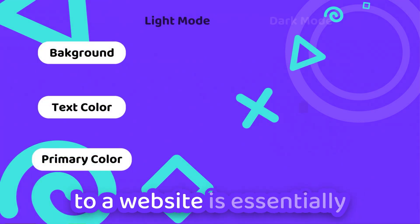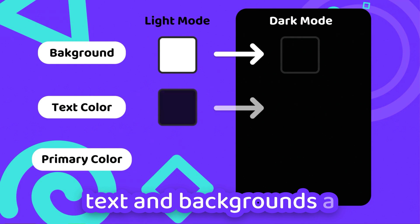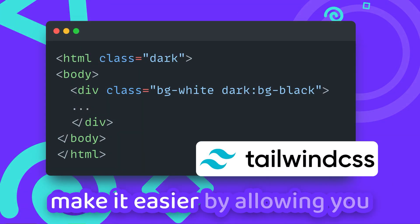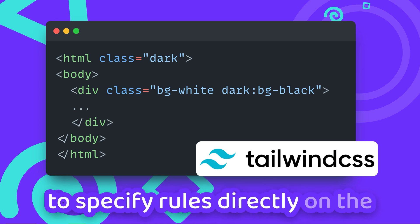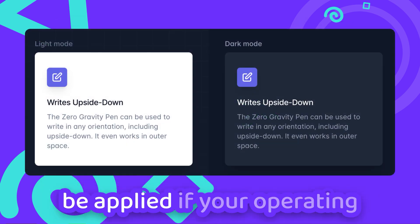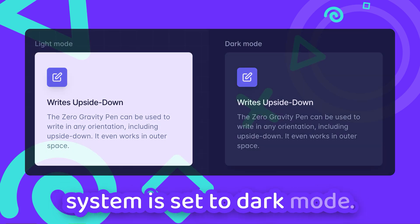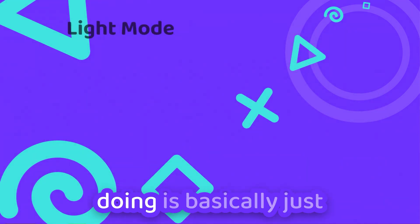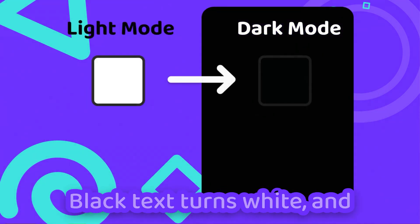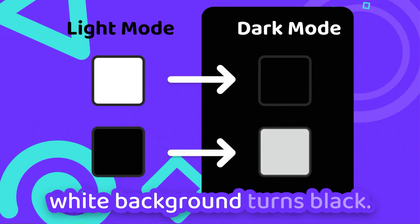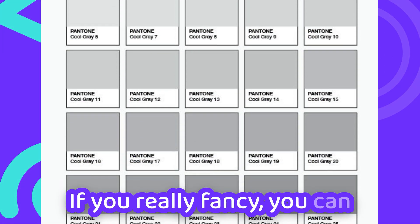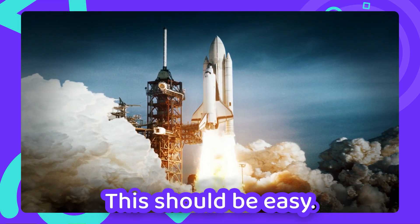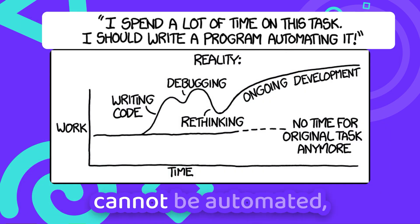Manually adding dark mode to a website is essentially specifying all colors of text and backgrounds a second time, but inverted. CSS frameworks like Tailwind make it easier by allowing you to specify rules directly on the HTML element that will only be applied if your operating system is set to dark mode. You can also use CSS variables to speed up that process. But what you end up doing is basically just inverting all colors — black text turns white and white background turns black. If you really fancy, you can use some shaded grey instead. But that's not rocket science — this should be easy. There's no way this cannot be automated.